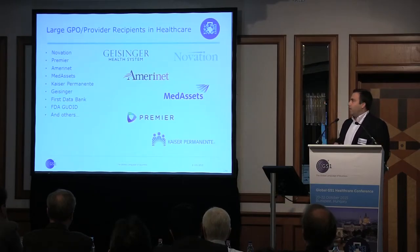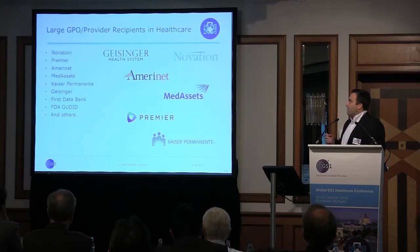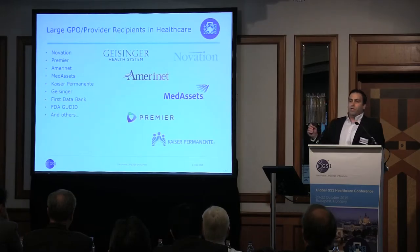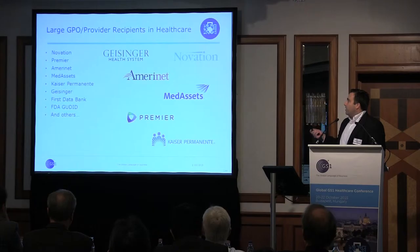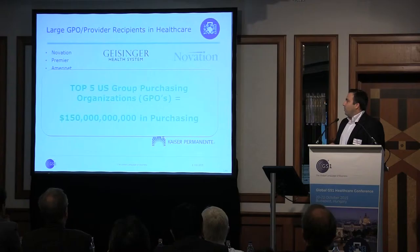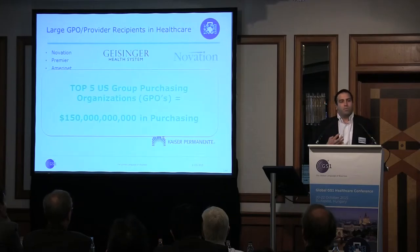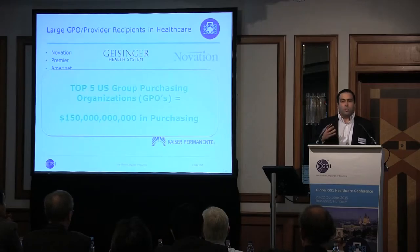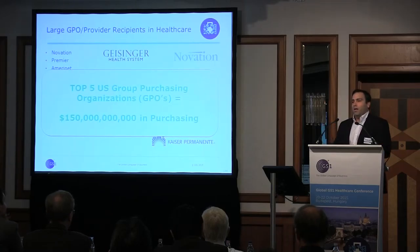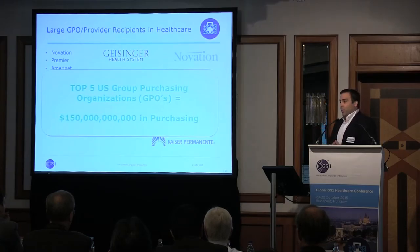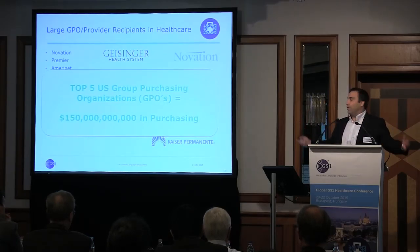The top five GPOs — group purchasing organizations in the US — represented by Novation, Amerinet, MedAssets, and Premier, basically represent $150 billion in purchasing. So when you're thinking about this from the perspective of an organization trying to go out to the community and to your suppliers, and you're trying to build this storyline, it's important to put it in the context that by routing this information through this methodology, you're not just getting it to you, but you're getting it to all this other opportunity out there in the marketplace.